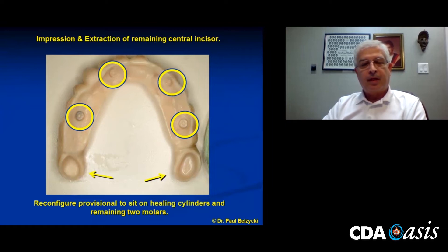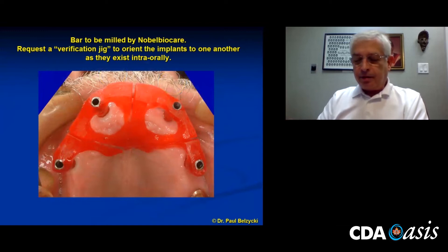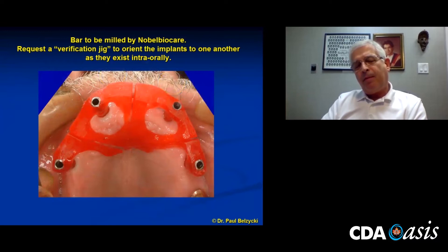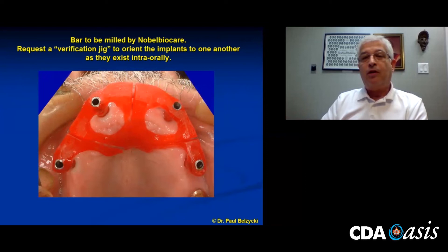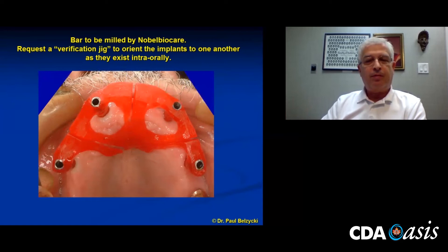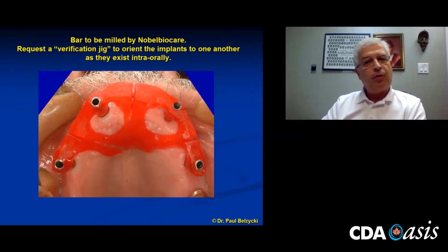Now we talk about high tech, and part of this presentation deals with that. We're having a bar milled by Nobel BioCare using CAD/CAM. Even though I thought I gave them a wonderful impression, they said we require a verification jig in order to orient the implants to one another as they exist intraorally — they want to be comfortable that they have as accurate a representation as possible before going through the process of milling.